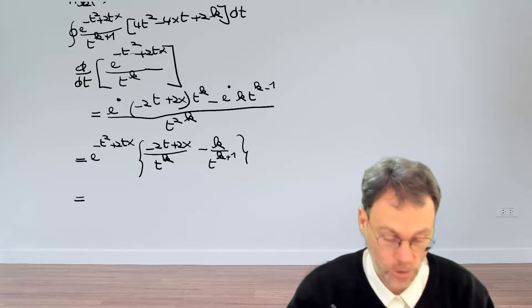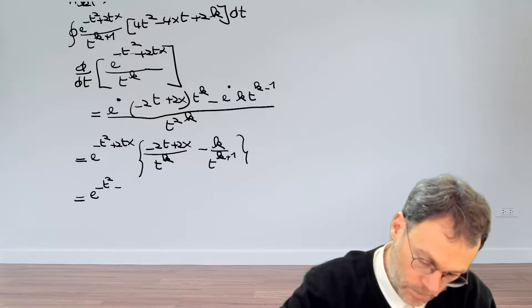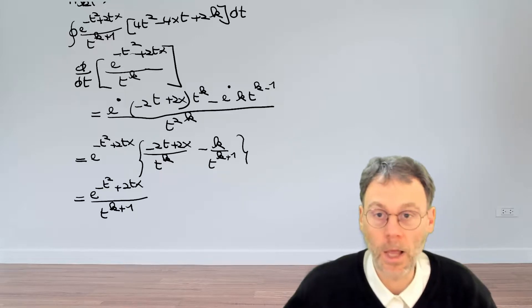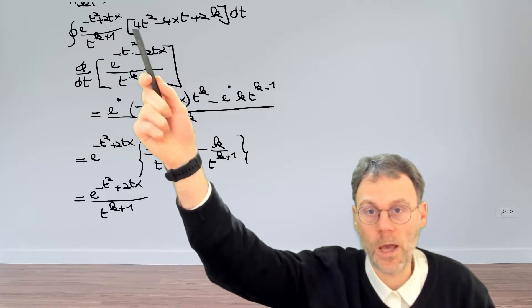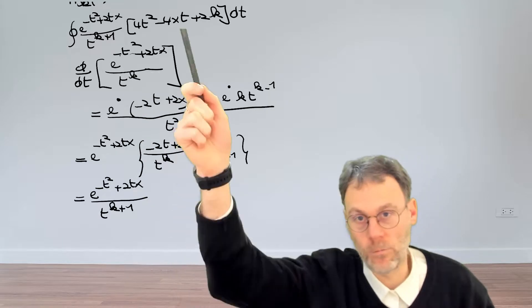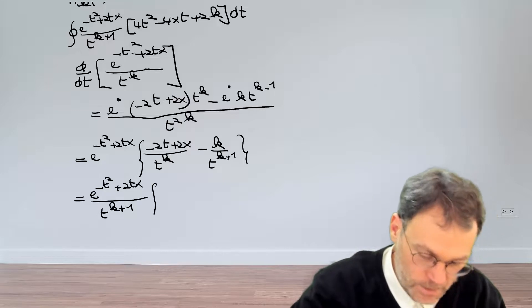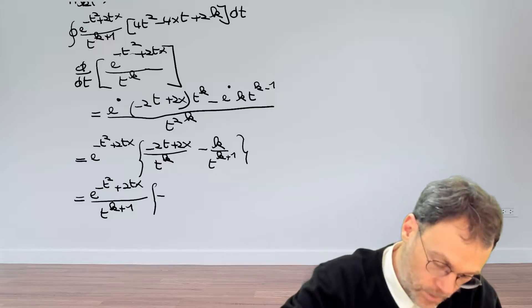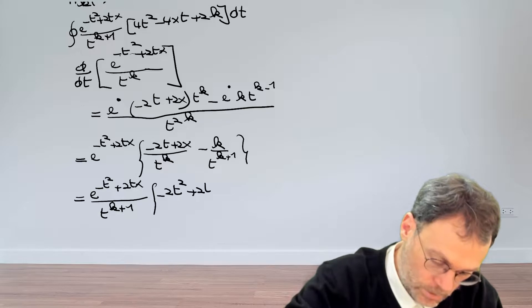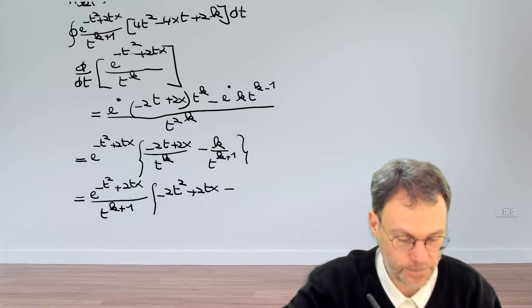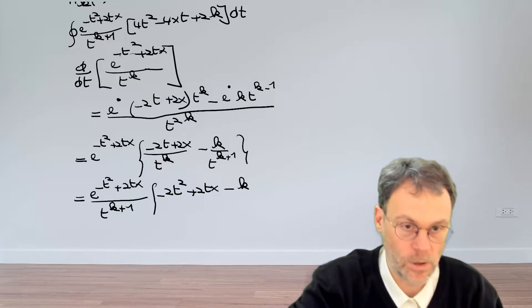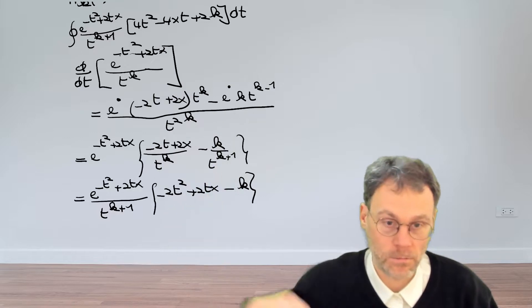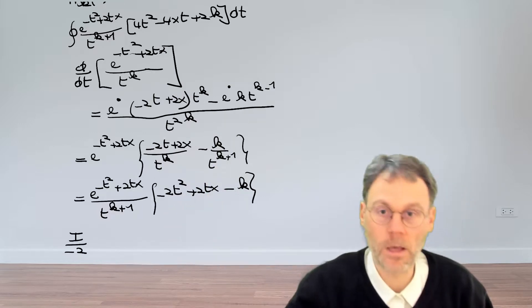Bringing this onto a common denominator t^(k+1), we get exp(-t² + 2tx) divided by t^(k+1), multiplied by (-2t² + 2tx - k). This looks suspiciously like what we have in our integrand. There is a factor of minus 2 that we can easily work with — if we divide our integral by minus 2, we can recognize it as the contour integral of this expression.